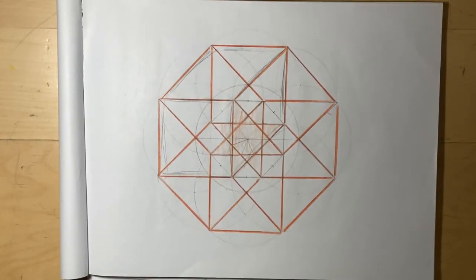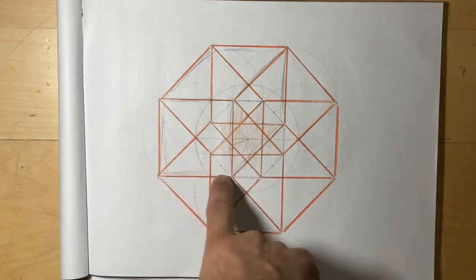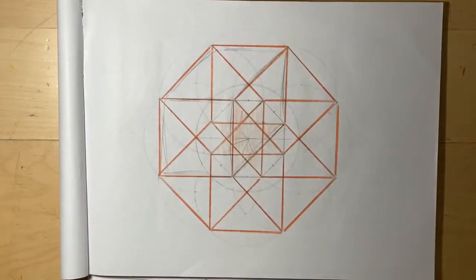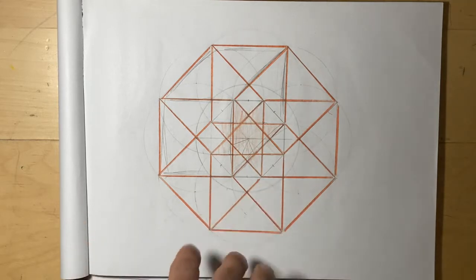We're going to be working on this pattern here, which is pretty fun. It's got an eight-pointed star, but you can also see here the square and then going backwards, a three-dimensional rectangle. So it's kind of an eye mind-bender or visual trick.